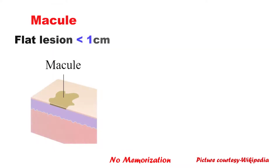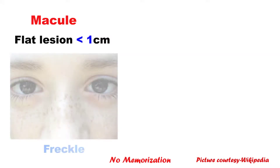Let's start with macule. Macule is a flat lesion with a well-circumscribed change in skin color of less than 1 cm. Two important points: it is a flat lesion, which means if you touch it you will not feel any bumps, and the size is less than 1 cm. A good example is a freckle.